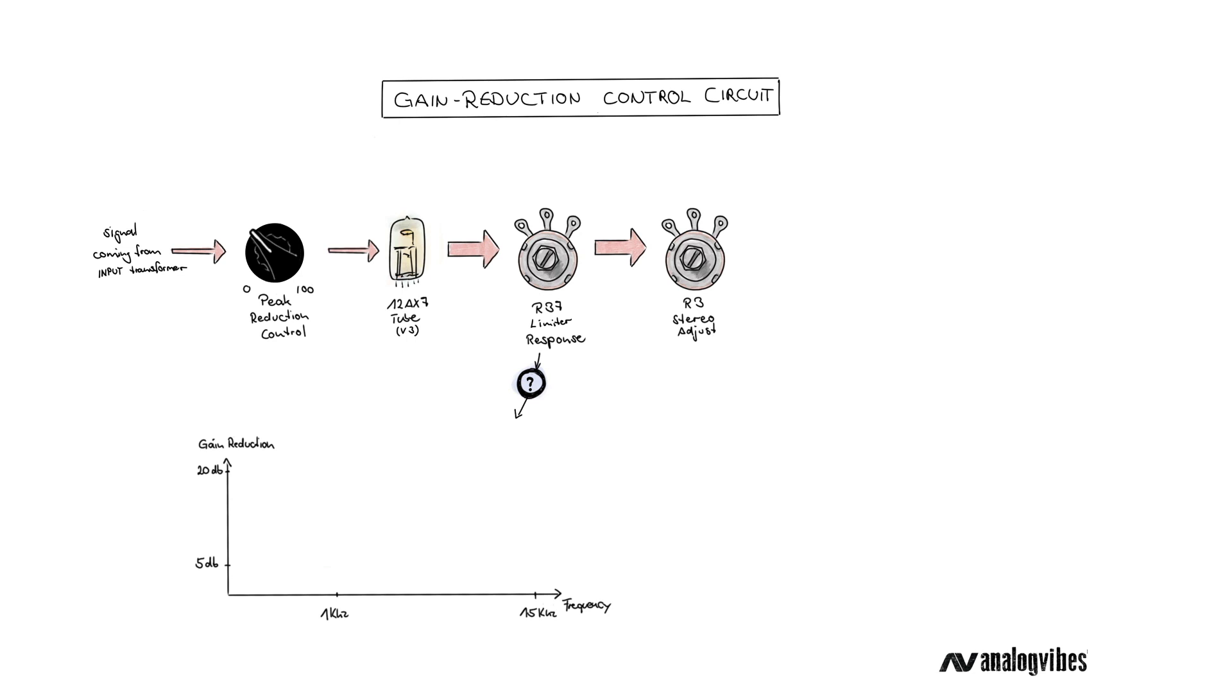Let me draw a little diagram. With R37 in fully clockwise position, the compressor treats all frequencies of the signal equally, meaning the amount of compression applied is the same across the entire frequency spectrum.